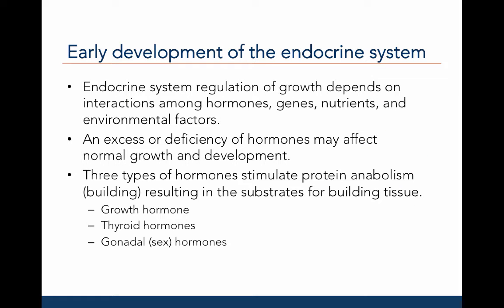The endocrine system regulation of growth depends on the interactions among hormones, genes, nutrients, and environmental factors. During development, an excess or deficiency of hormones may affect normal growth and development. Three types of hormones stimulate protein anabolism, which results in the substrates necessary for building tissue of systems like the skeletal, muscular, and adipose systems.